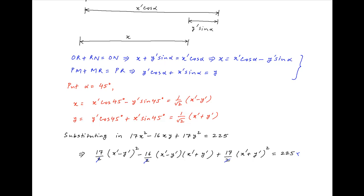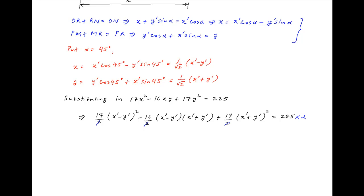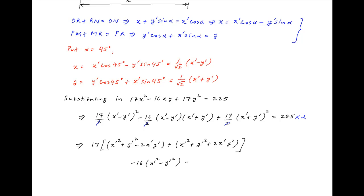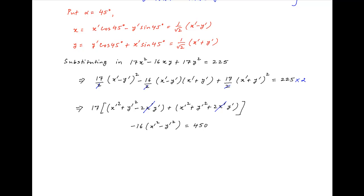Expanding both sides and multiplying out the brackets, we get 17 times (X'² + Y'²) terms, and the cross terms 2X'Y' cancel inside the brackets. Minus 16 times (X'² minus Y'²) equals 450. This equation simplifies to X'² times (17 plus 17 minus 16) plus Y'² times (17 plus 17 plus 16) equals 450.